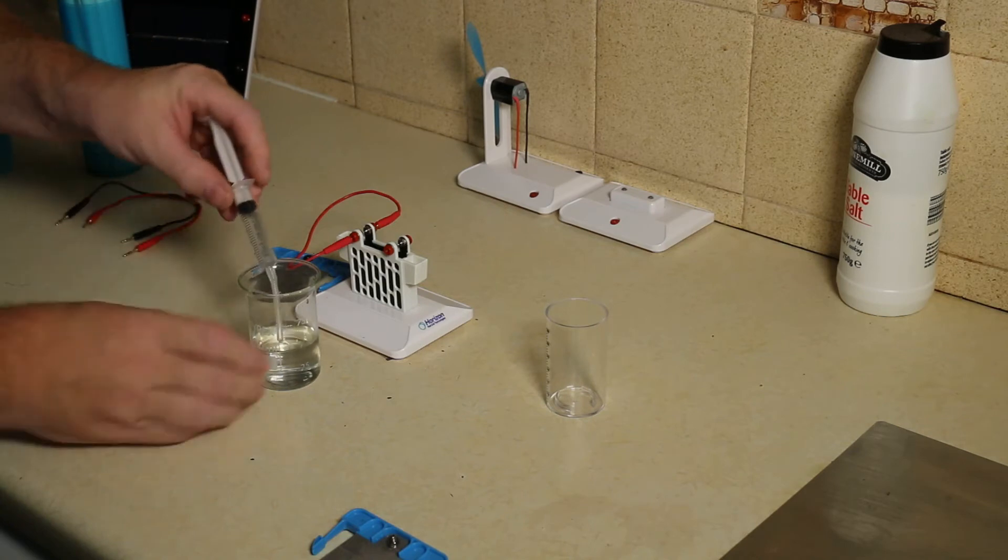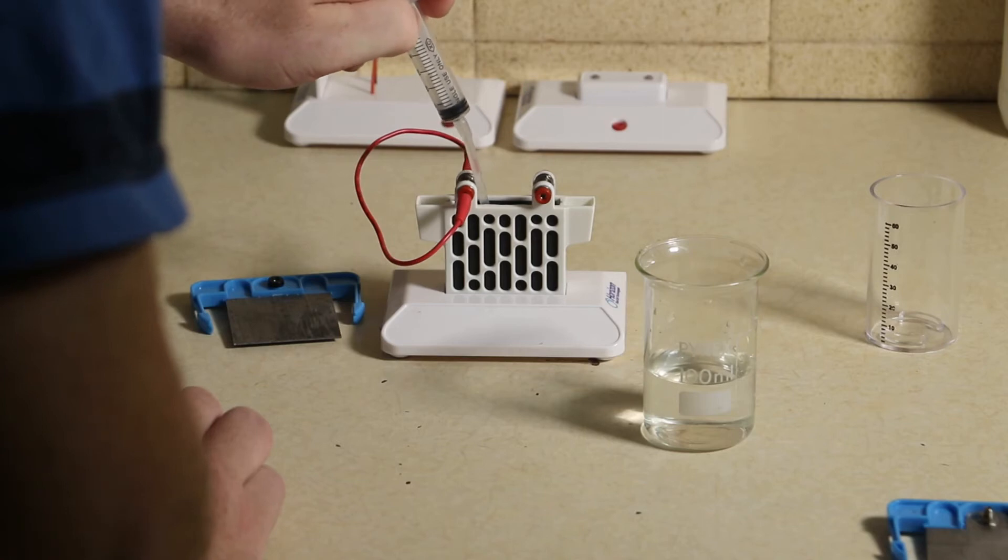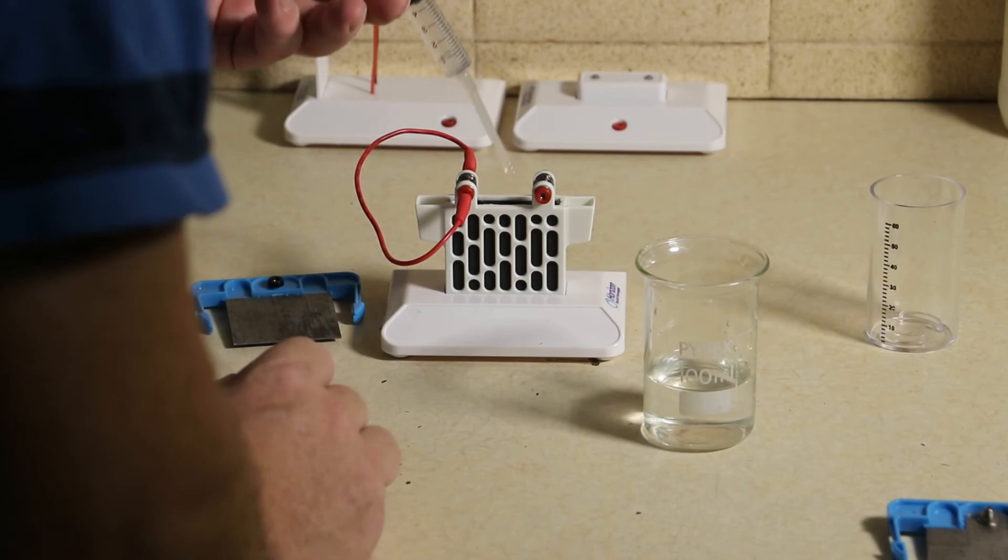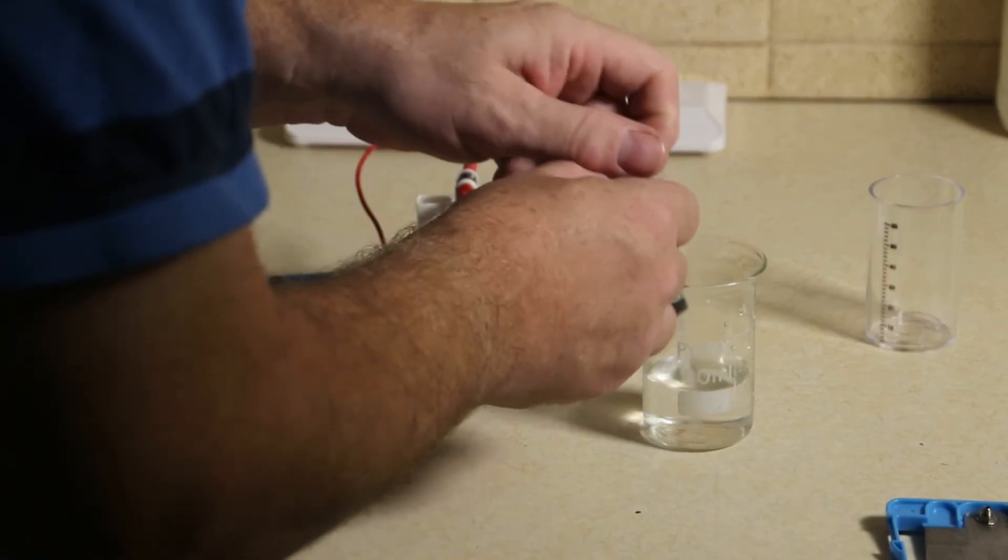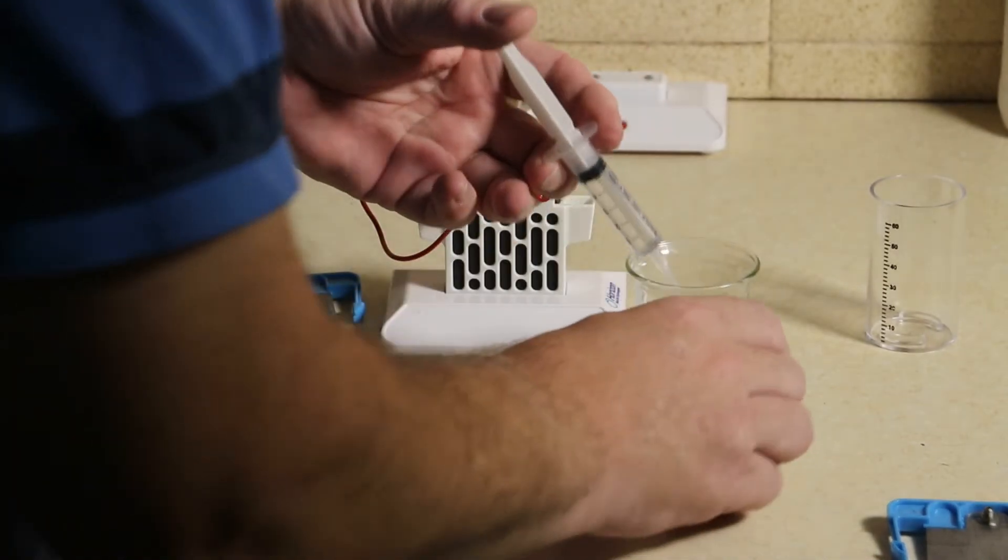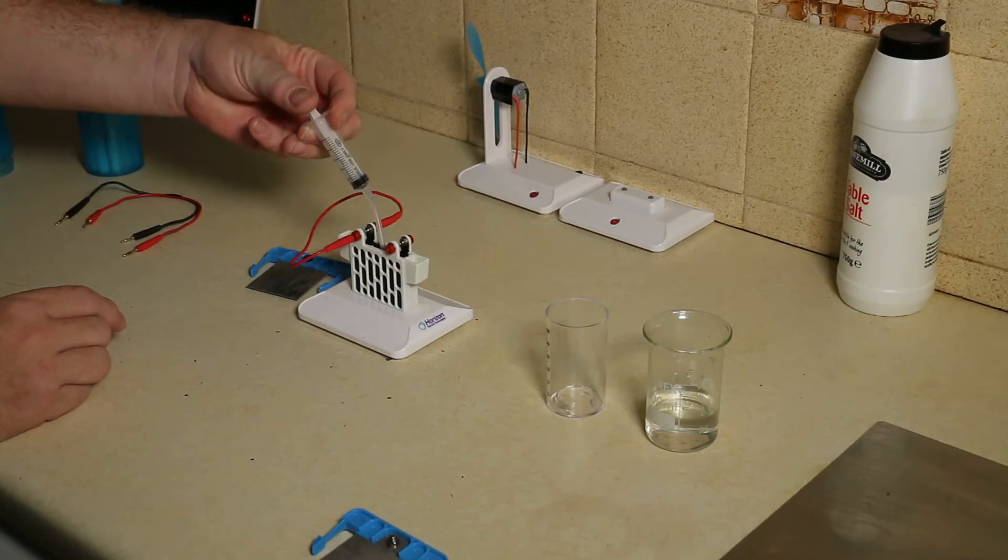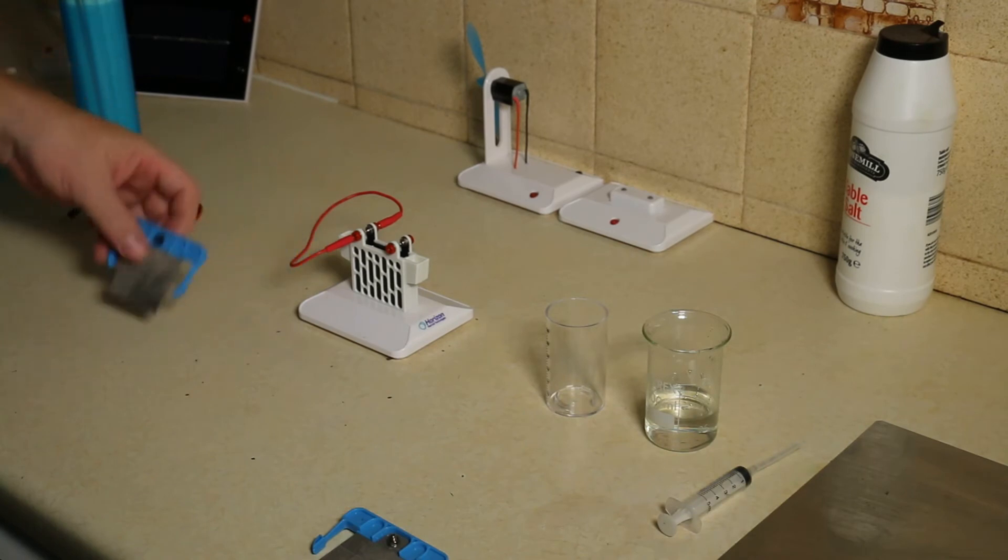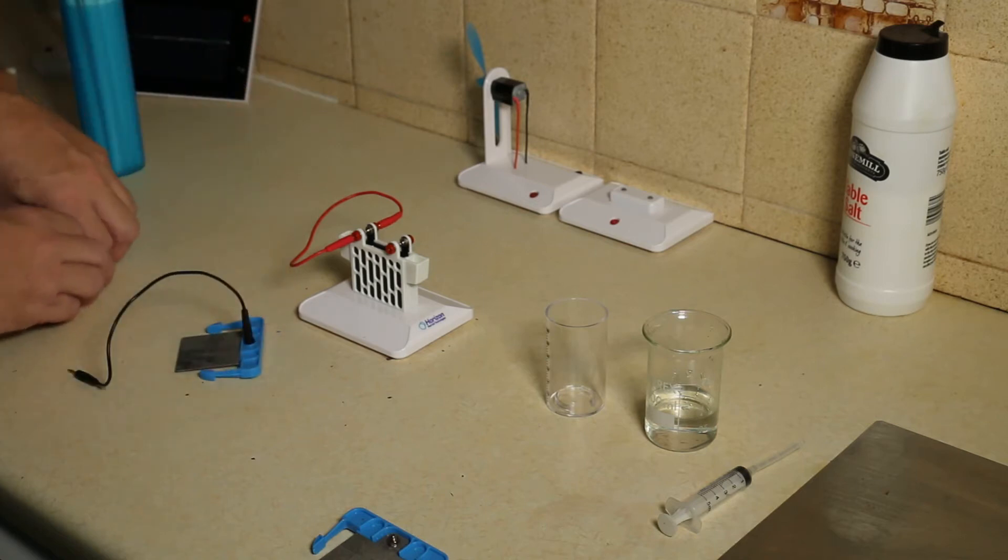What I'm going to do is, using this syringe, put about 15 mils into this cell. So that's about 5, 10, 15 mils.